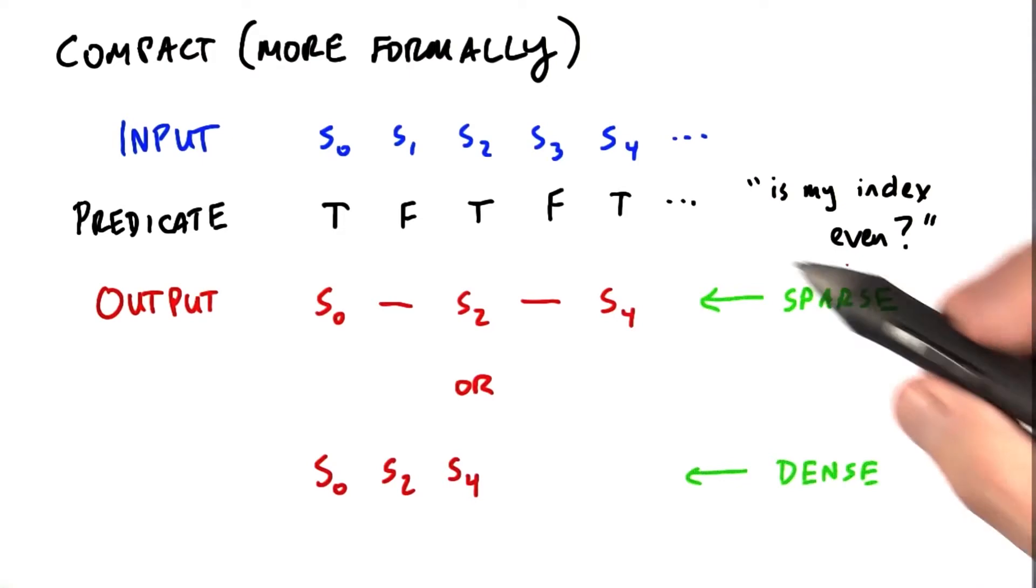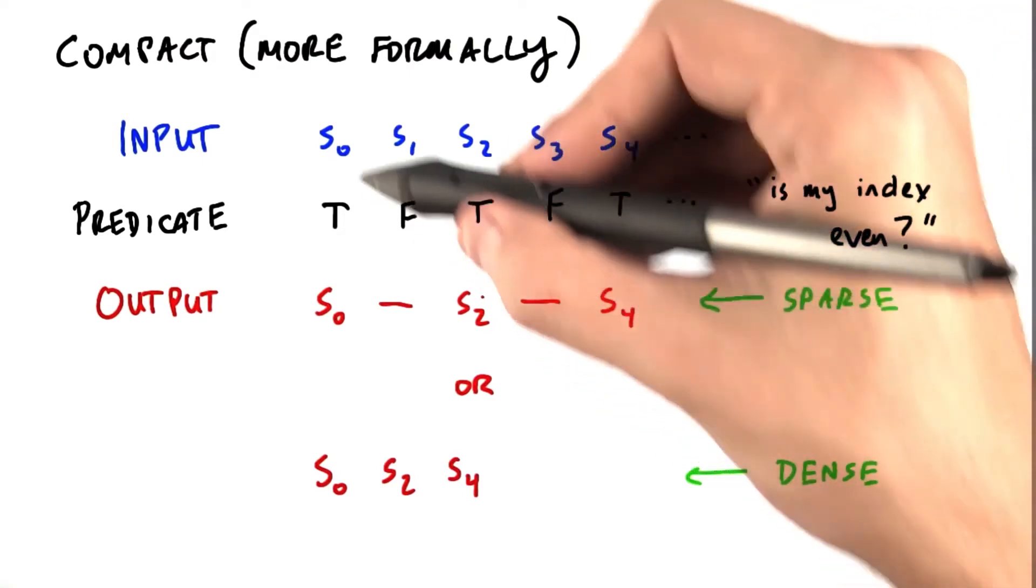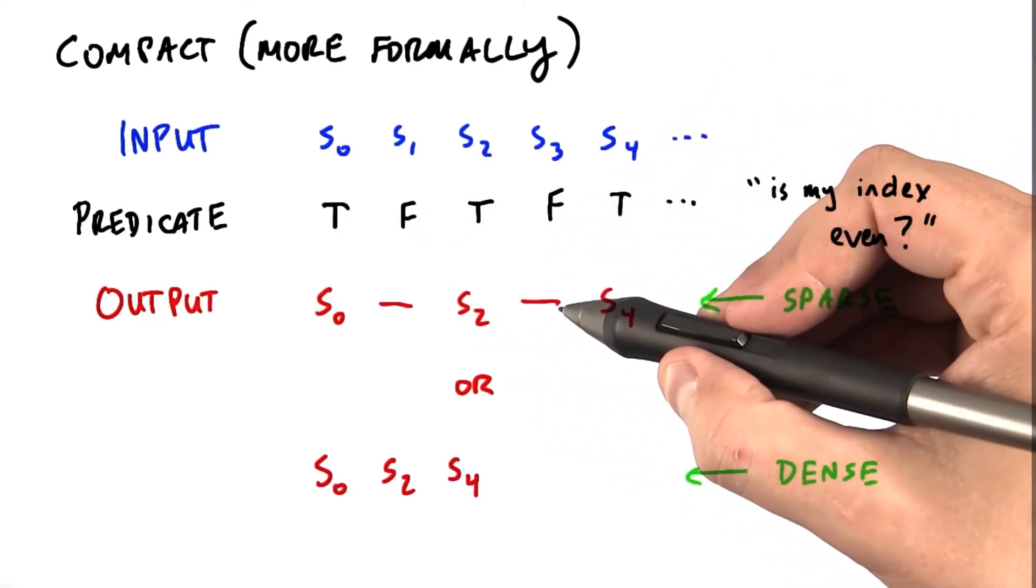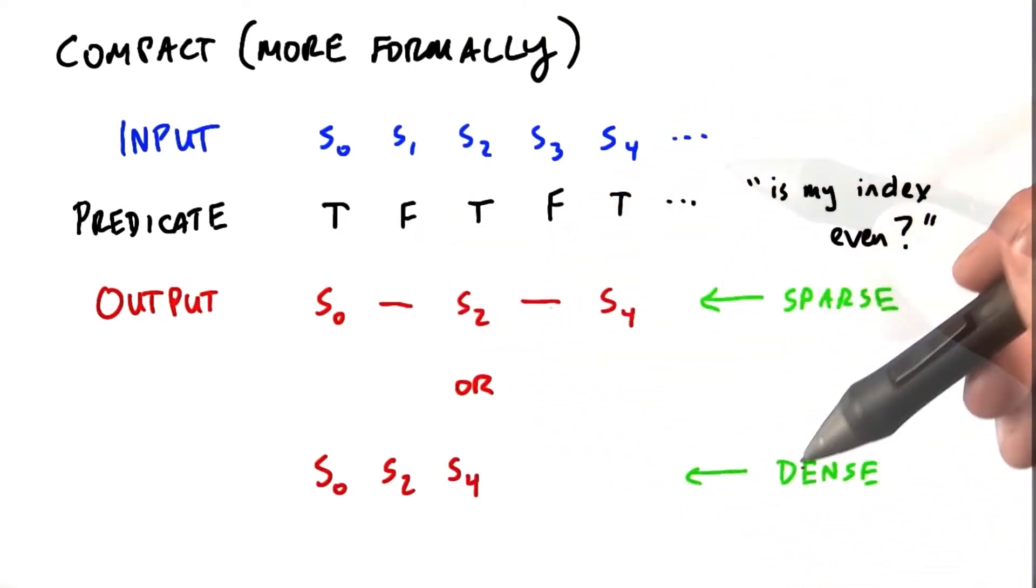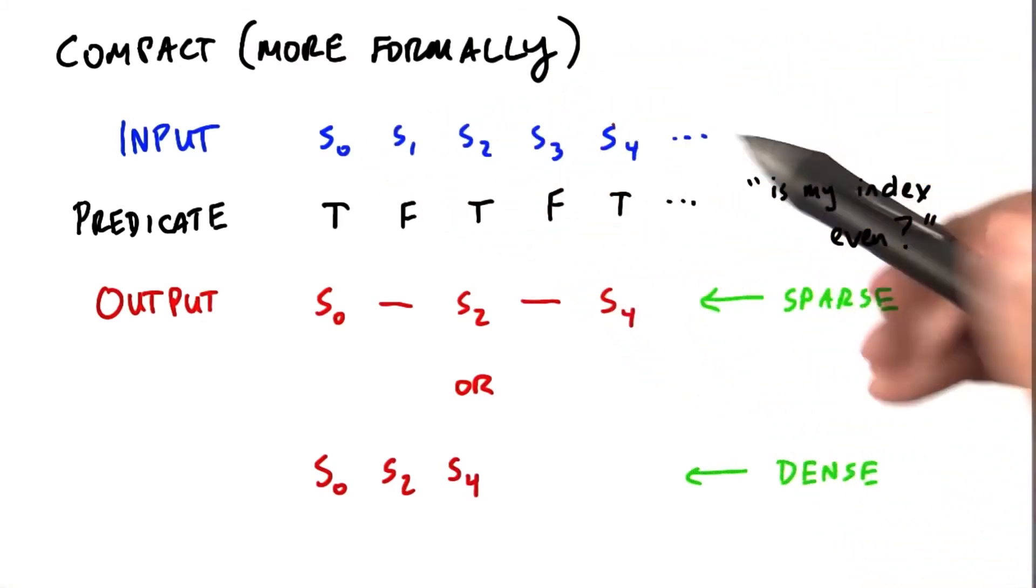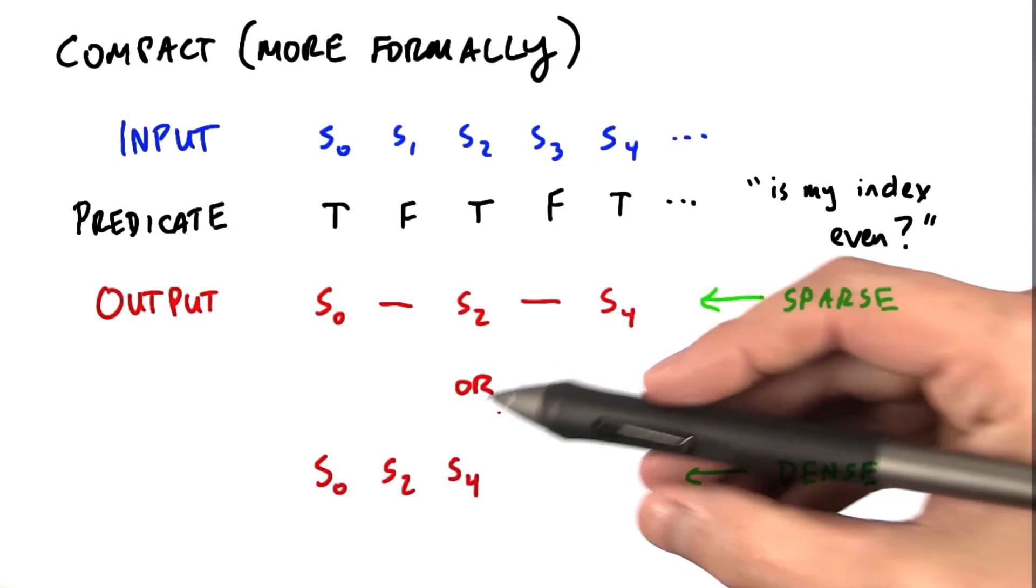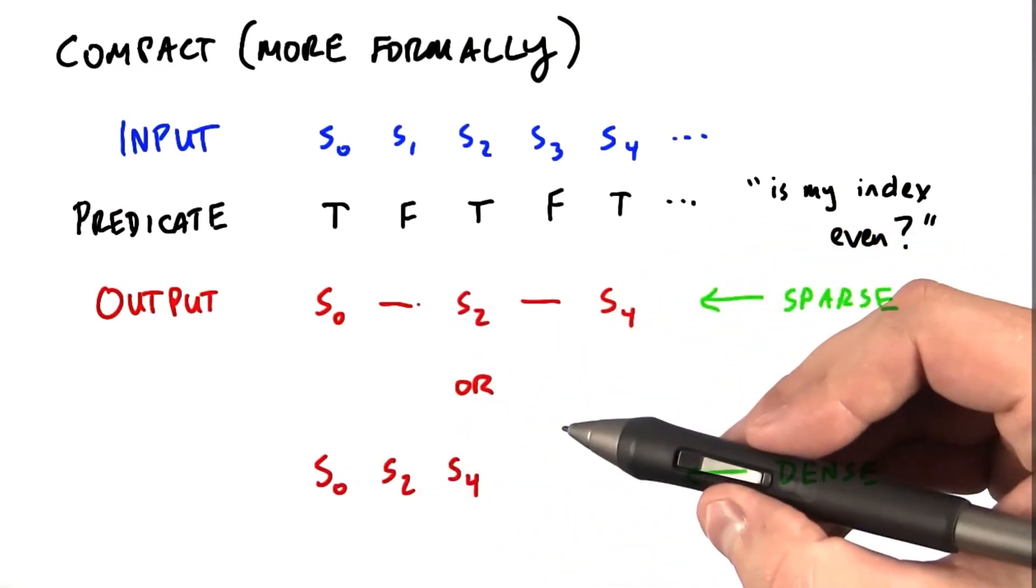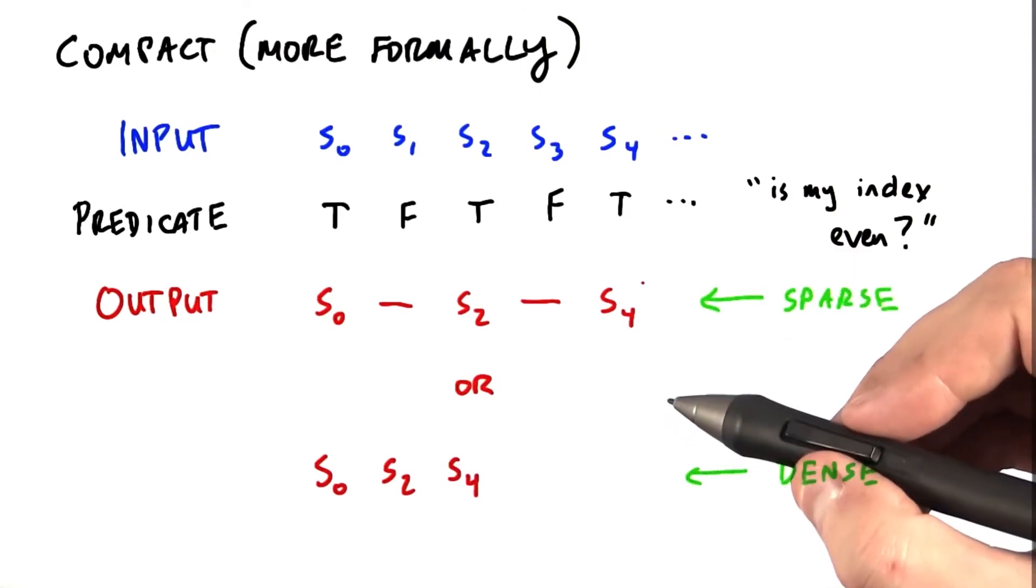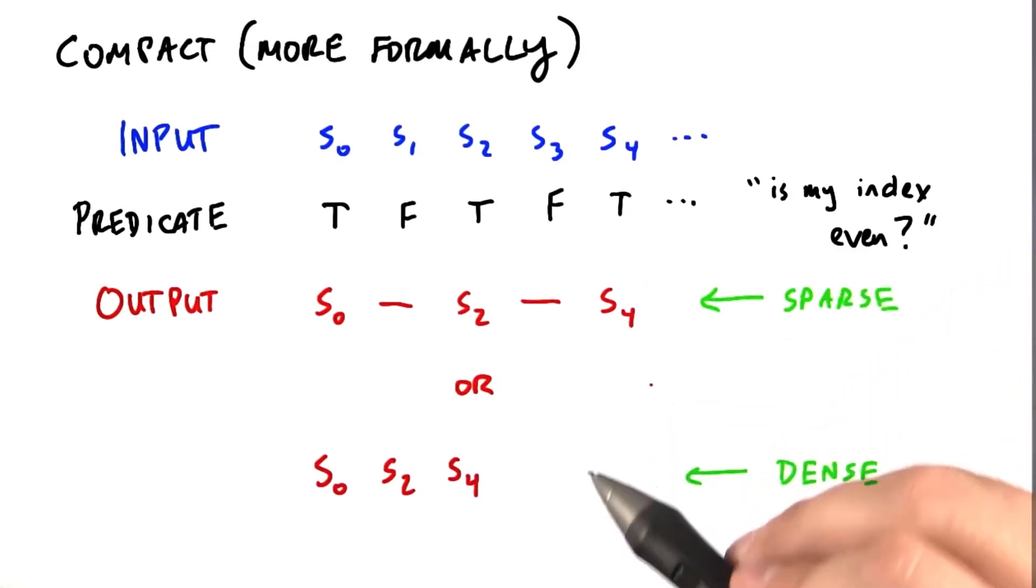We can either have a sparse output or a dense output. For the sparse output, each element tracks to its same position in the output, and if an input has a false predicate, we just put some sort of null element in there. Alternatively, we can have a dense output where all the elements for which the predicate is true are then packed together into the output, so they're all sitting right next to each other. There aren't any gaps in the output. In general, we want the output of a compact operation to be dense.